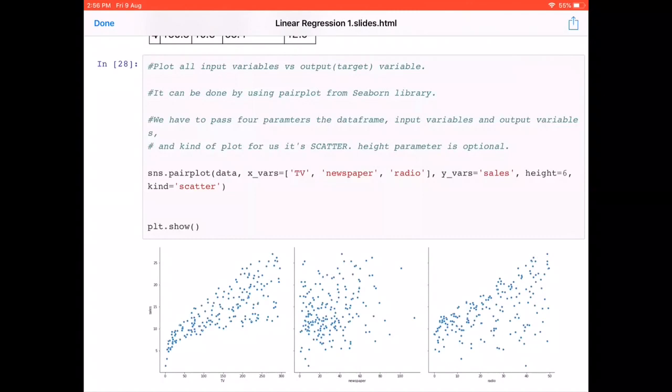We also have to pass what kind of plot we are trying to build here, and we are looking for a scatter plot. Very simple and straightforward. That's why I love these Python libraries—they make our life so simple. Just by four lines of code we are able to see the relationship between my input variables and output variables. My linear model says that each and every individual predictor or variable should be having a linear relationship with the output variable.